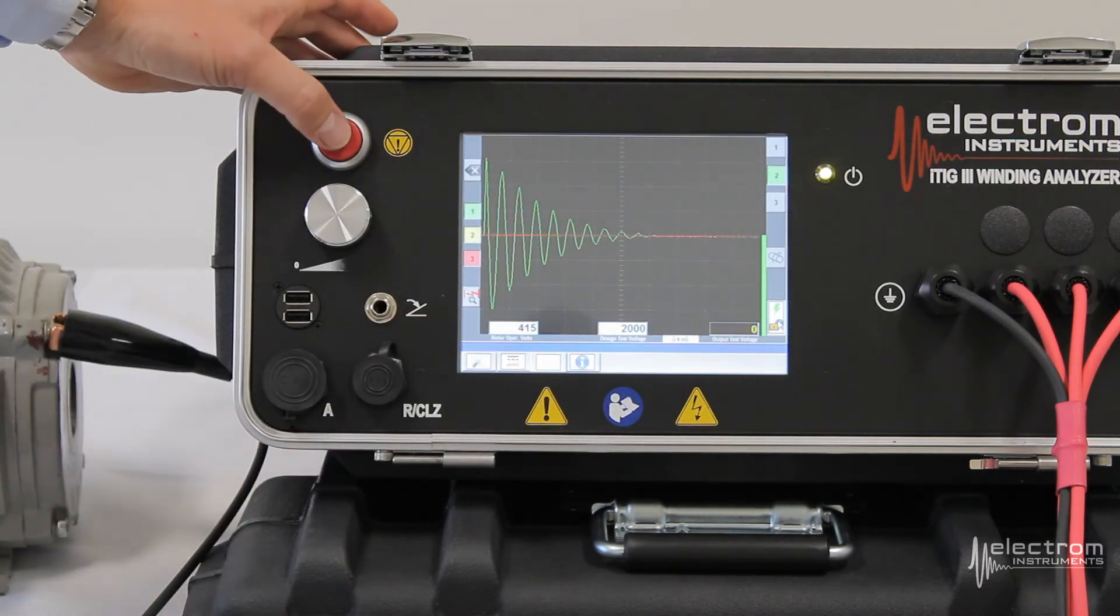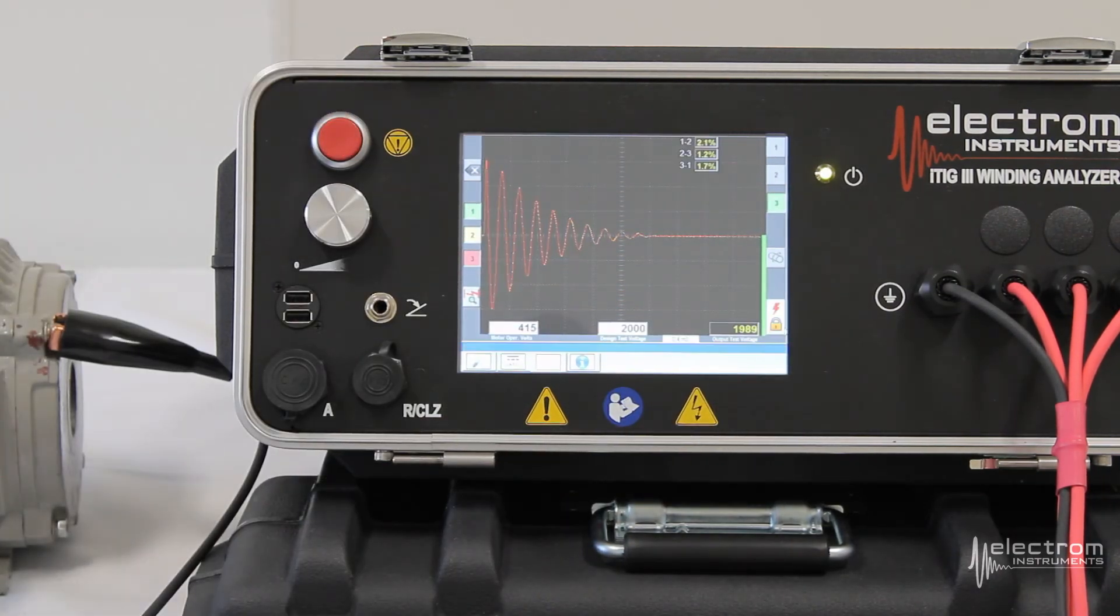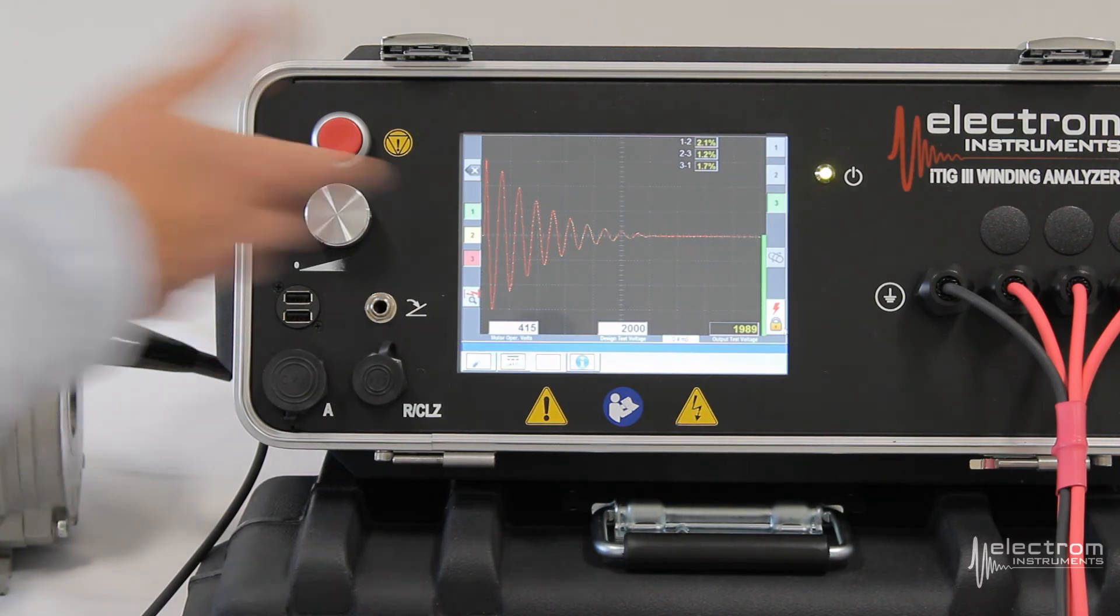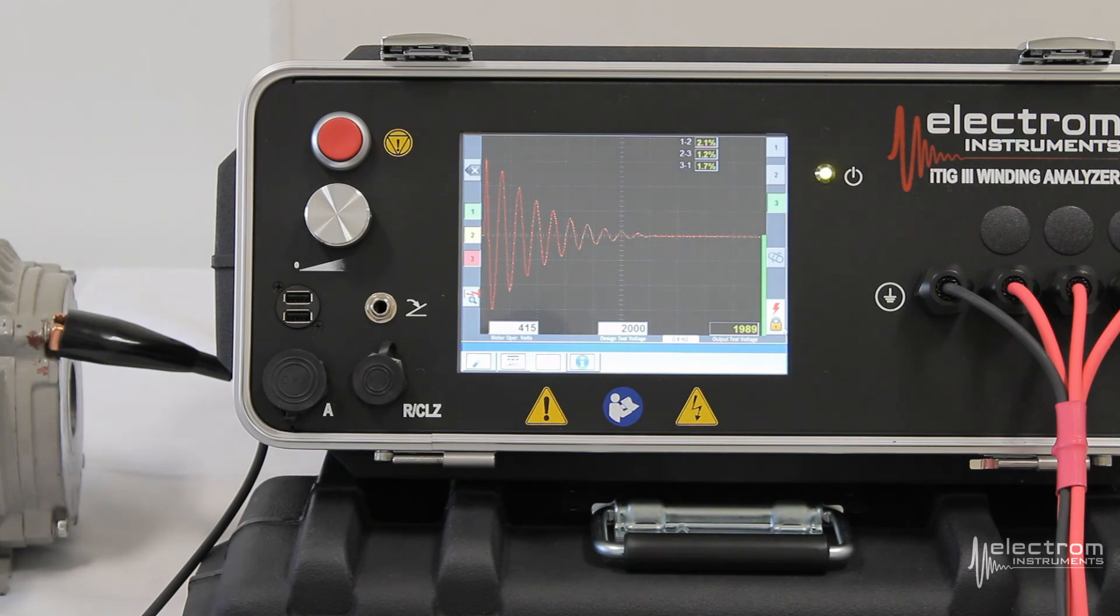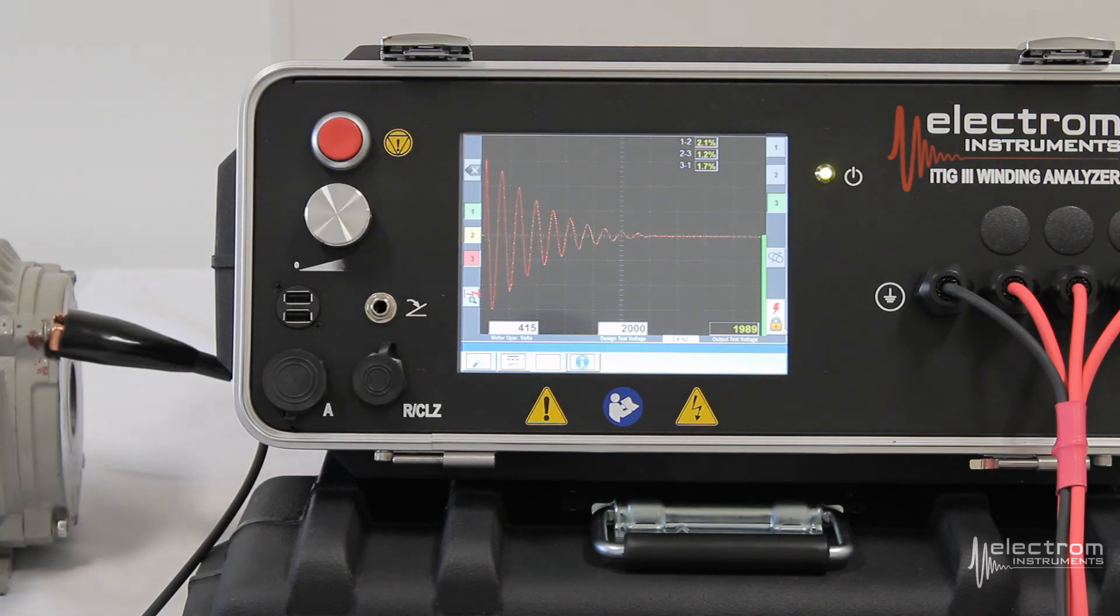Arm the instrument. Press the button. Phase 3, arm the instrument, press the button. And you now have your three surge waveforms for the three phases. As you can tell these are almost identical. So they're overlapping. It's hard to tell that we have three traces on the screen. But you get the percent wave differences listed on the top here.